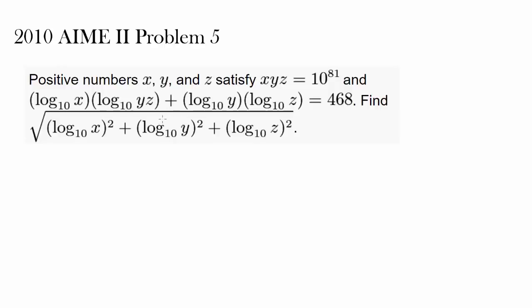Let's examine this question from 2010 AIME 2, problem 5. Positive numbers x, y, and z satisfy x times y times z equals 10 to the 81st power, and log base 10 of x times log base 10 of yz plus log base 10 of y times log base 10 of z is 468. We wish to find the square root of log base 10 of x squared plus log base 10 of y squared plus log base 10 of z squared.